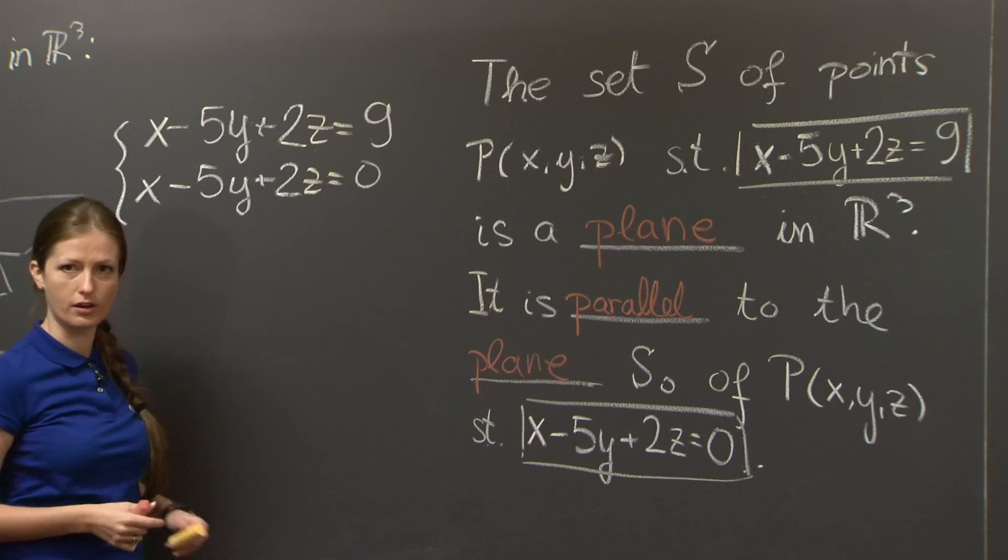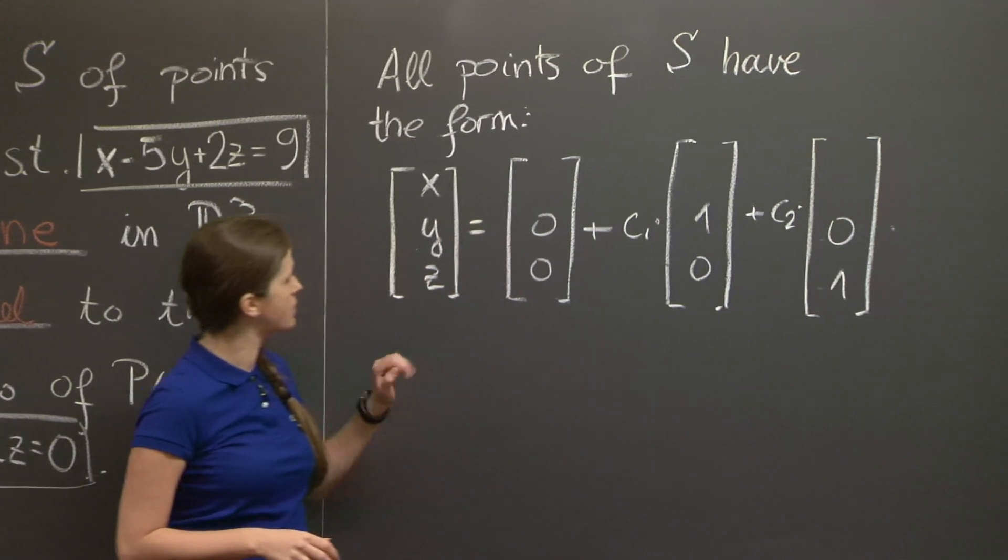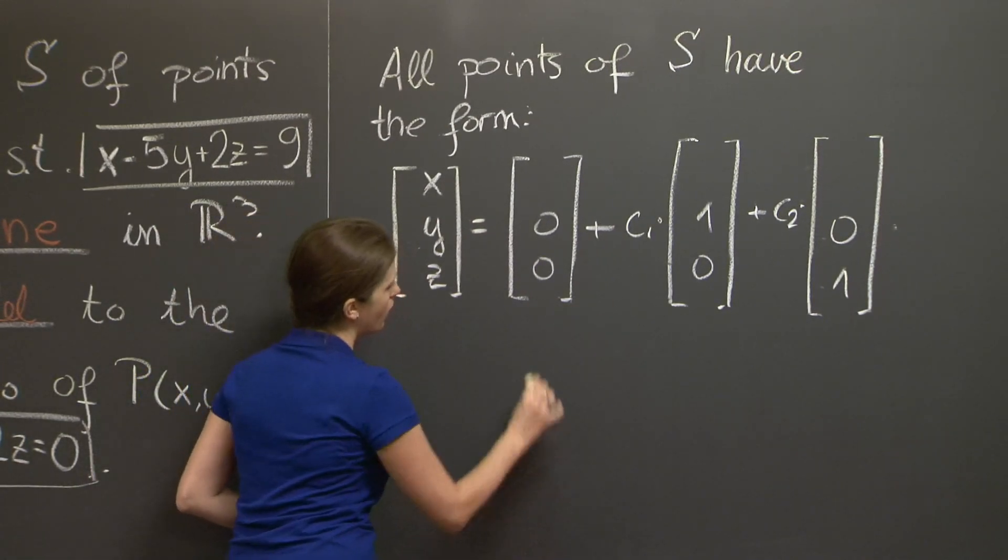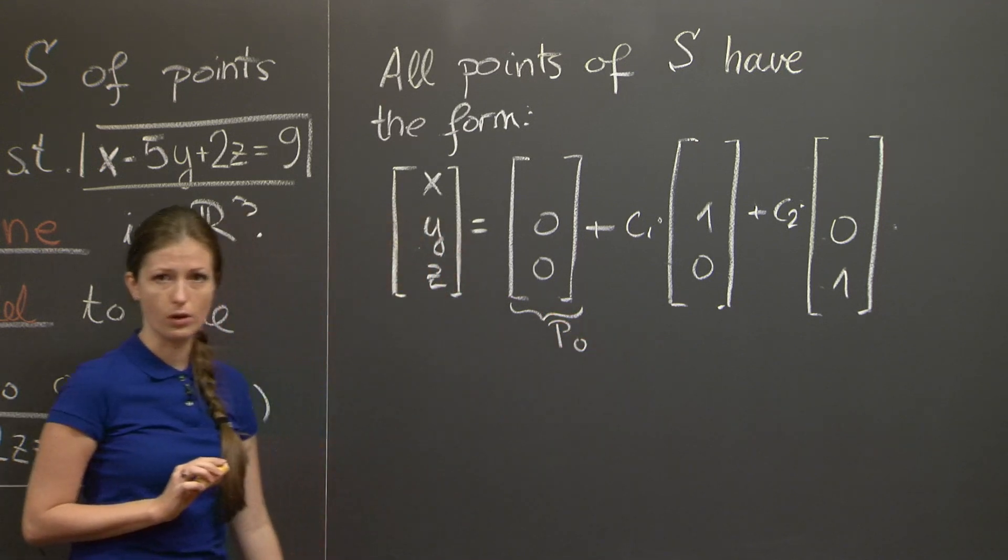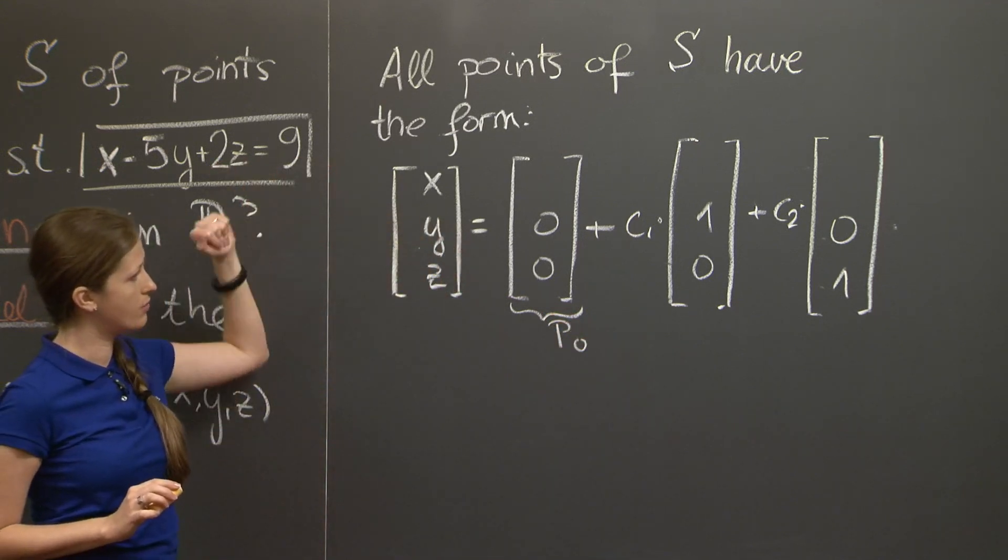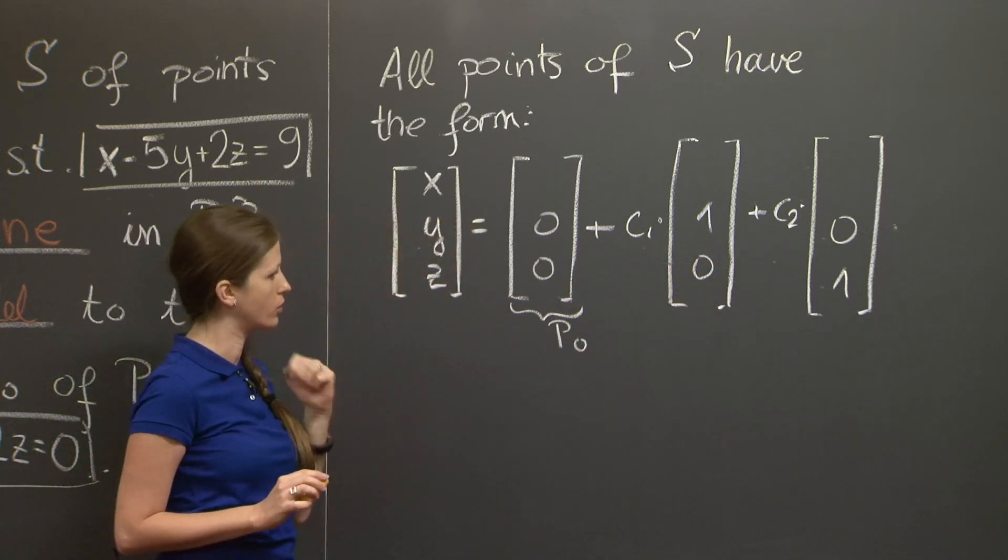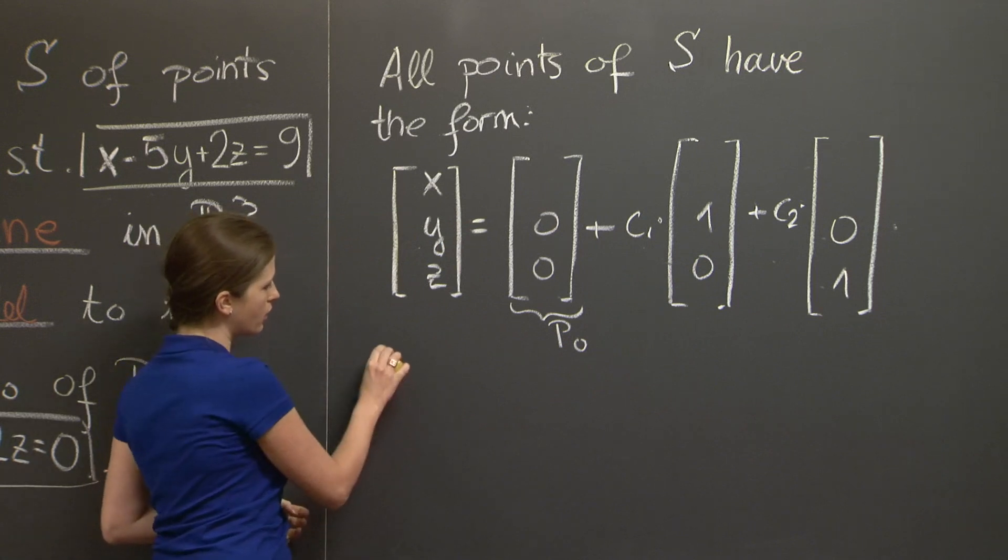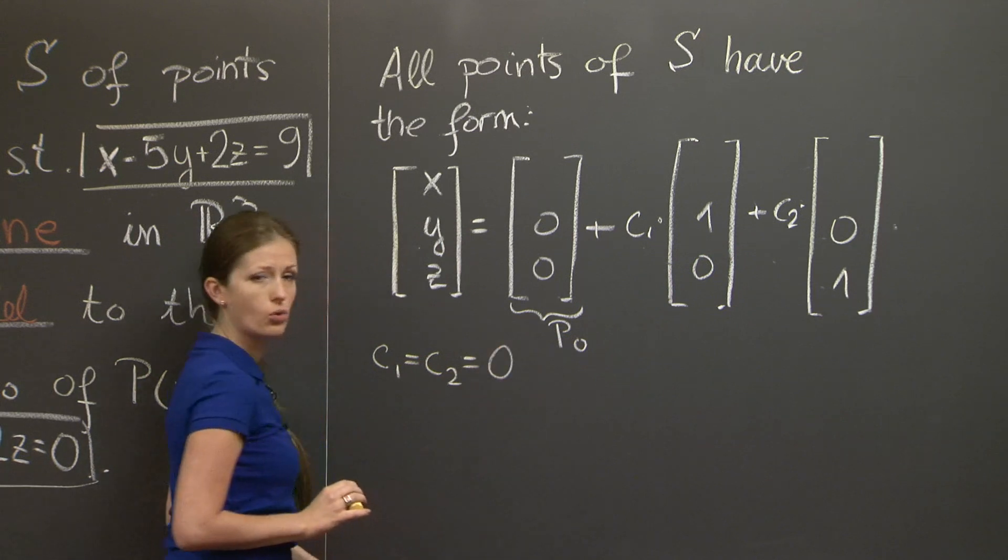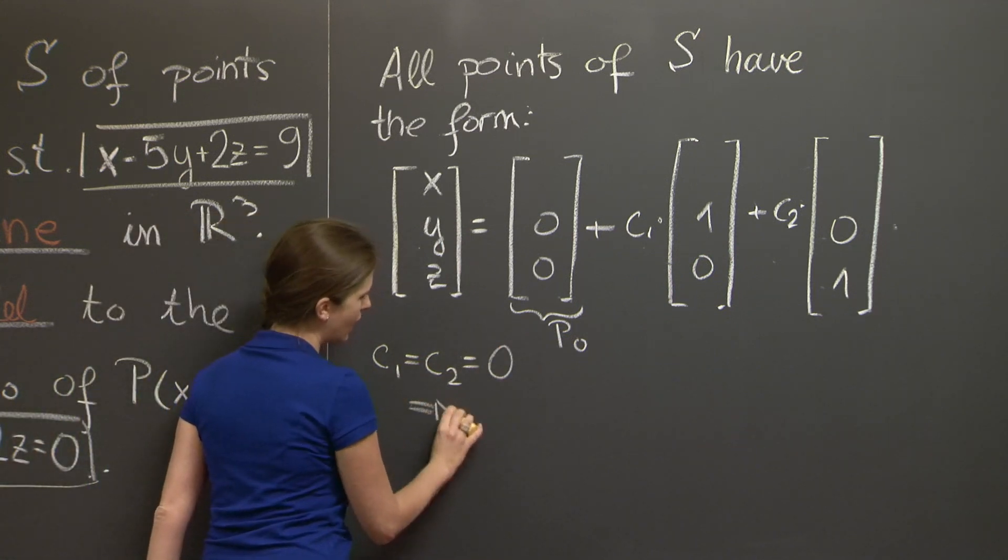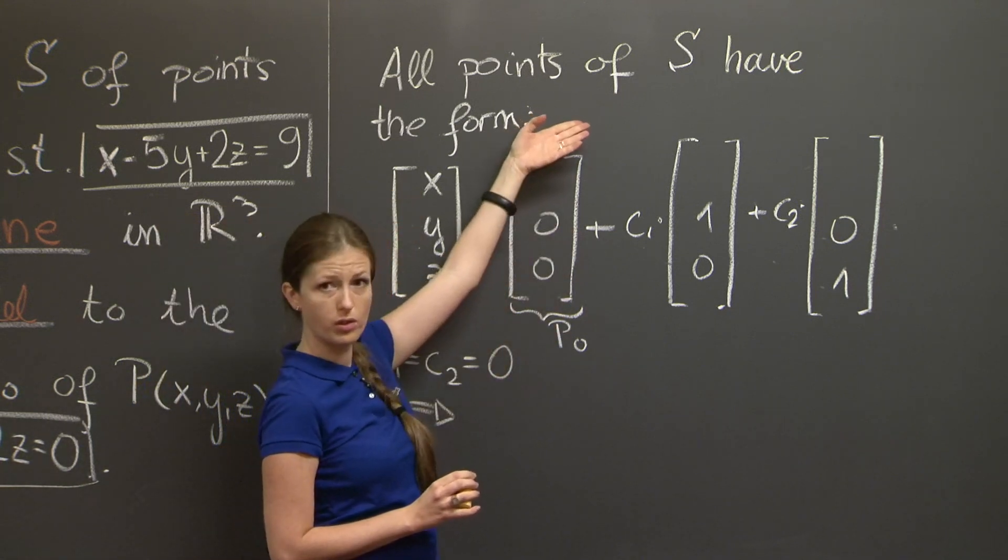And let's move on to the other half of the problem. The other half said all points of S have this specific form. Now let me call this point here p₀. If all points of S have this form, we can plug in any parameters c₁ and c₂ here, and we're going to get a point of the plane. So in particular, we can plug in c₁ and c₂ equal to 0. What we get then is that the point (x, y, z) = p₀ is a point of the plane S.